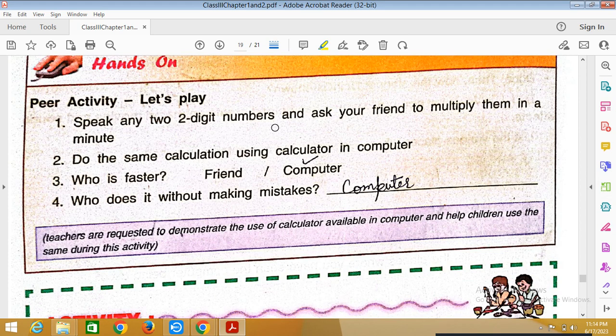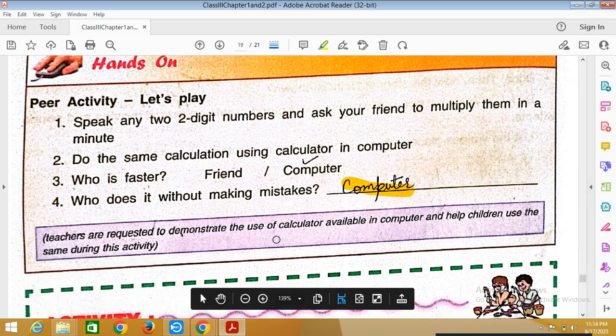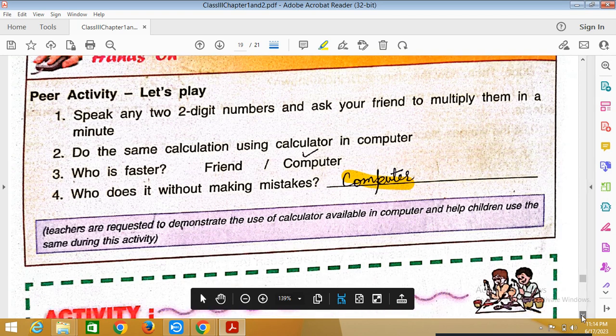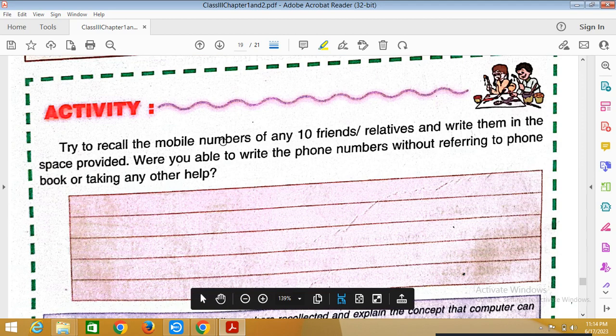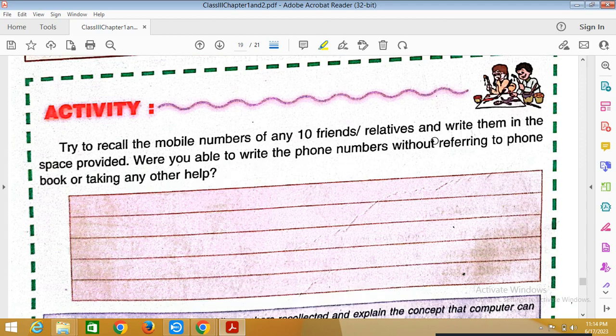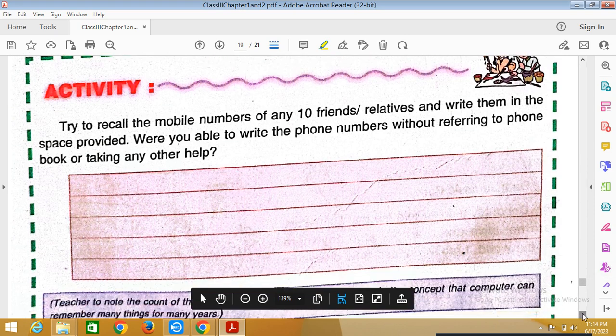Speak any two-digit numbers and ask your friend to multiply them in a minute. Do the same calculations using calculator in computer. Who is faster? Of course the computer is faster. It does it without making mistakes. Teachers are requested to demonstrate the use of calculator available in computer. Try to recall the mobile numbers of friends or relative and write them. Is it possible? No. Are you able to recall the phone numbers without referring to phone book or diary? No, it is not possible for us to remember thousands or hundreds of mobile numbers, but it is possible by computers without any mistakes and confusion.